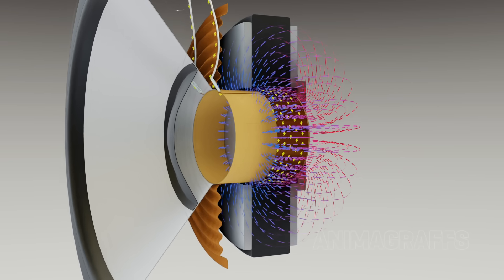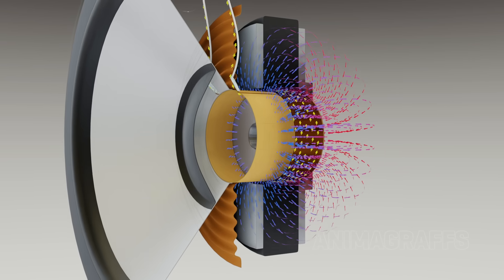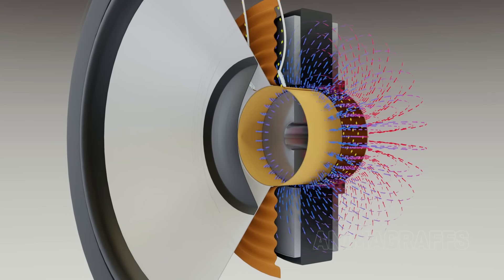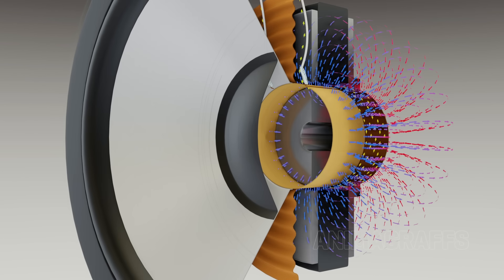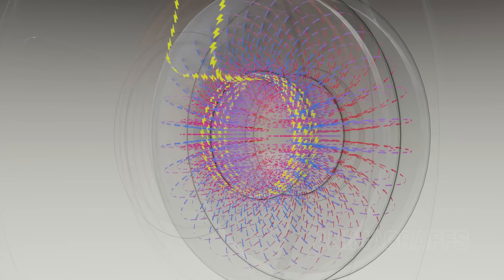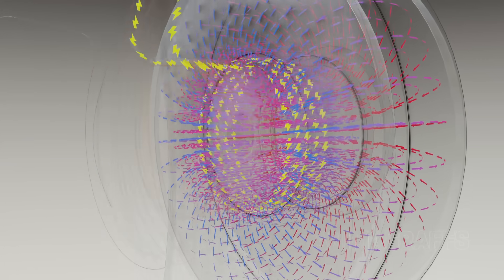An intricate electrical signal flows through the voice coil windings, causing it to move back and forth as its magnetic field pushes and pulls against that of the permanent magnet. This electrical current is a precise replica of the audio that was originally recorded.